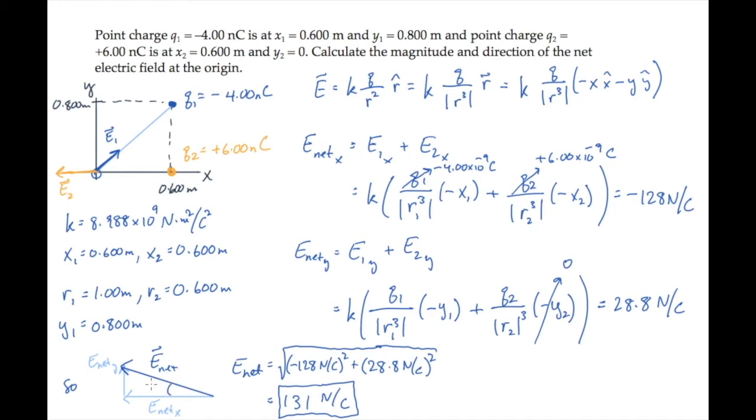We'll write its direction first in terms of this angle phi, and then in terms of the polar angle theta. Phi is the inverse tangent of the ratio of the lengths of the two sides, opposite over adjacent. That works out to 12.7 degrees. And theta is 180 minus that, which works out to 167 degrees. So that gives us the magnitude and direction of the net electric field at the origin.